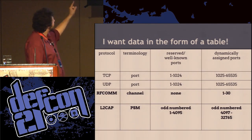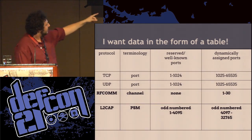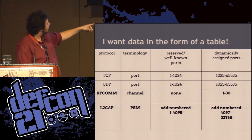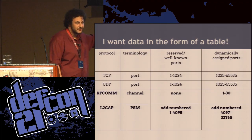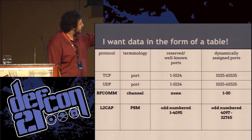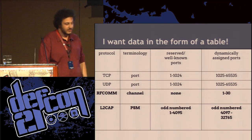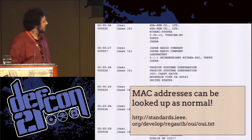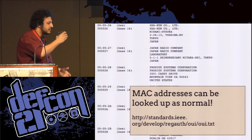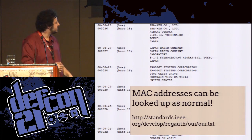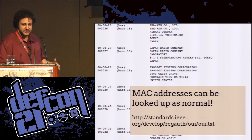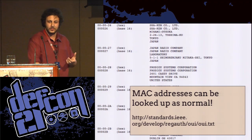Here's a comparison: TCP and UDP we all know. RFCOMM has channels 1 to 30. L2CAP uses PSMs — Protocol Service Multiplexers — with odd numbers, reserved at the base, about 4,000 interesting ones, and the spec says it goes up to 32,000. You can look up Bluetooth MAC addresses the same way you'd look up network adapter MACs, though it doesn't align neatly — it doesn't say 'Apple Incorporated' like a network MAC would.